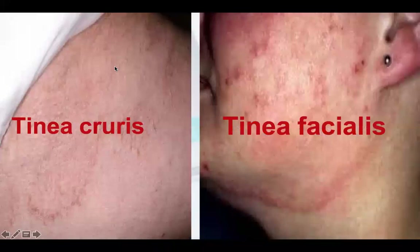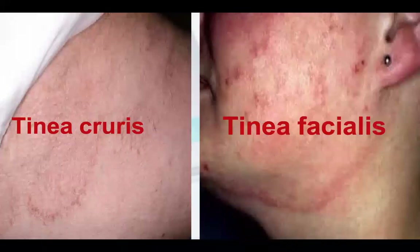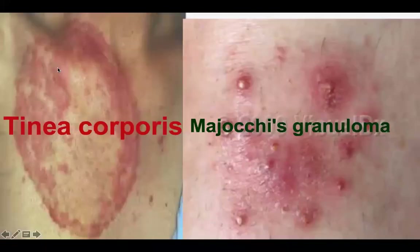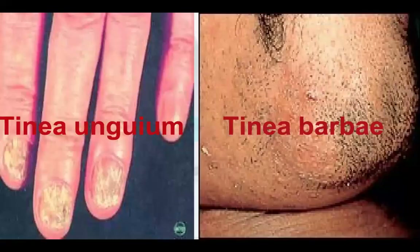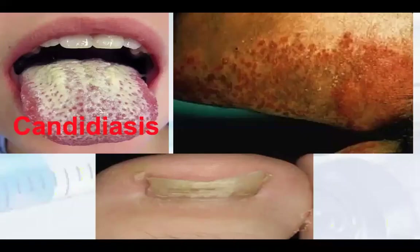Further, on the left side, tinea cruris is there; tinea faciei is there. You can see different types of fungal growth on the skin — tinea corporis, Majocchi's granuloma, different types of tinea over the body. Tinea unguium is seen on nails, tinea barbae is seen on the chin or face area.